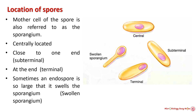The mother cell, here also known as the sporangium — endospores may be centrally located, close to one end (called subterminal), or terminal. Sometimes an endospore is so large that it swells the sporangium.